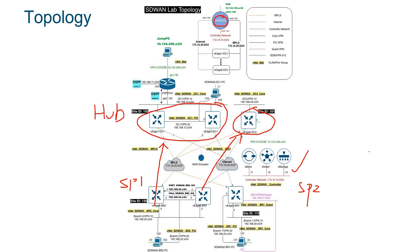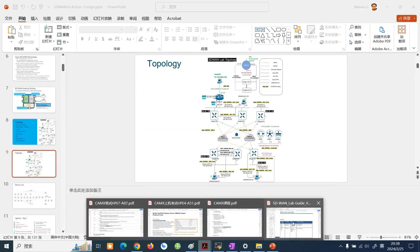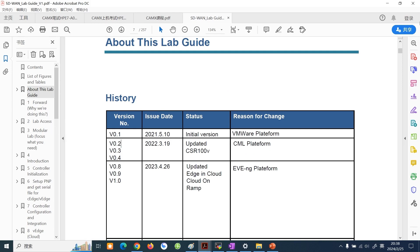That covers our knowledge points and topology discussion. Next, let's look at the lab manual's table of contents. We have two learning materials: our PPT and a very important lab manual. This lab manual briefly introduces the scenarios in which our SD-WAN can operate.